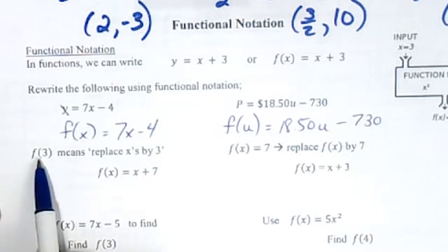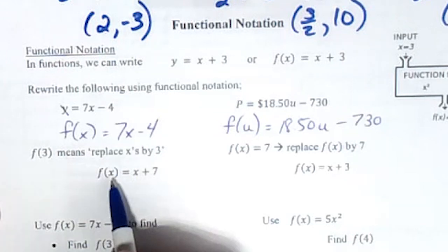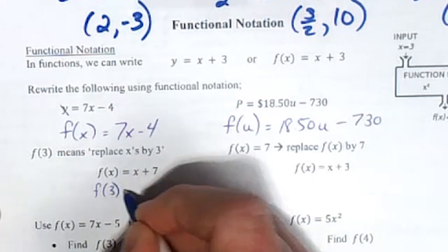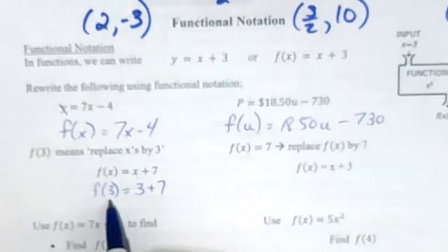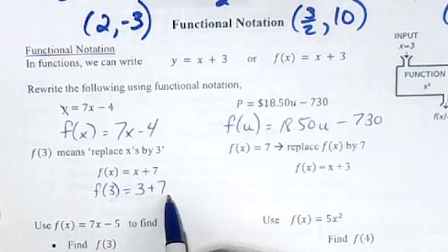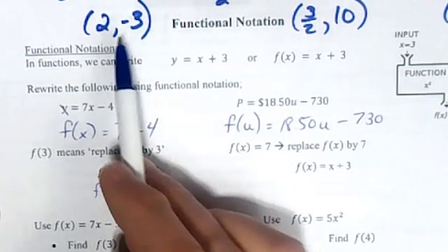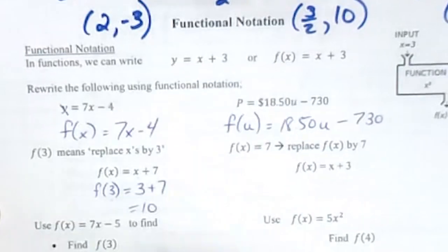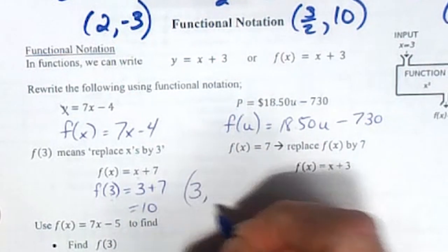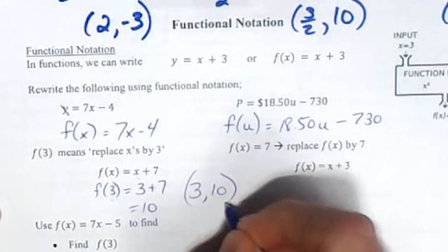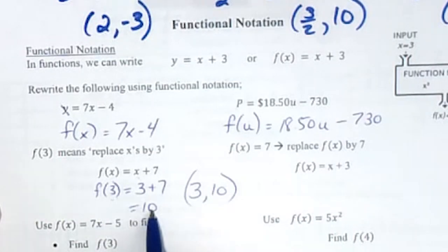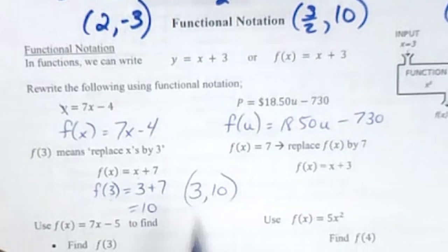If we have this one here, f of 3, this means we're just going to take this 3 and replace both x's. So the function of 3, f of 3, is 3 plus 7 equals 10. Basically this gives us an ordered pair just like the last section. We started with 3 - 3 is the x, 10 is the y. Even though we're not using y, the answer is the y coordinate in the ordered pair.